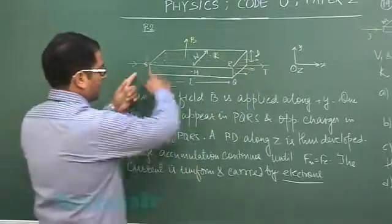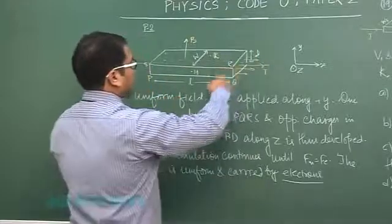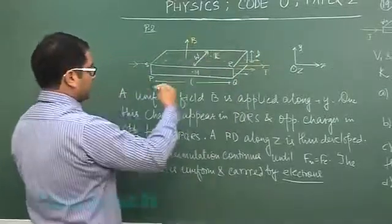Now what happens, see the strip is of length L, width W, thickness D. K is the inner face and M is the outer face.